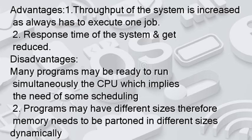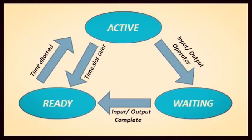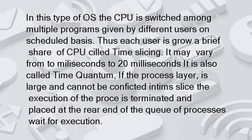The next type is the time sharing operating system. In this type, the computer is switched among multiple programs given by different users on a scheduled basis. Each user is given a brief share of CPU called time slicing, which may vary from 10 milliseconds to 20 milliseconds — also called time quantum. If a process is large and cannot be completed in the time slice, its execution is terminated and placed at the rear end of the queue, while smaller processes are executed first.